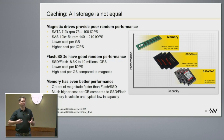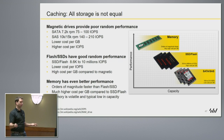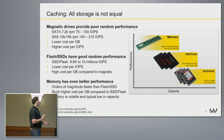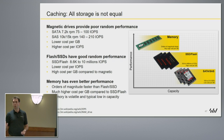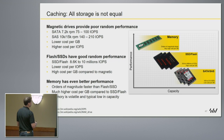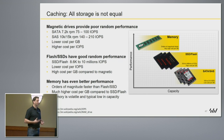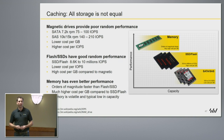SATA and SAS are particularly difficult in virtual environments because we see higher latencies due to the mechanical nature of the disks. SSDs, on the other hand, are really quick — they give us low latency and lots of IOPS, but they come with a cost. With SATA and SAS, you get more gigabytes for your money, whereas with SSD you get less gigabytes but you get the performance. On top of that, it's quite common now to leverage the internal memory of servers for caching as well.